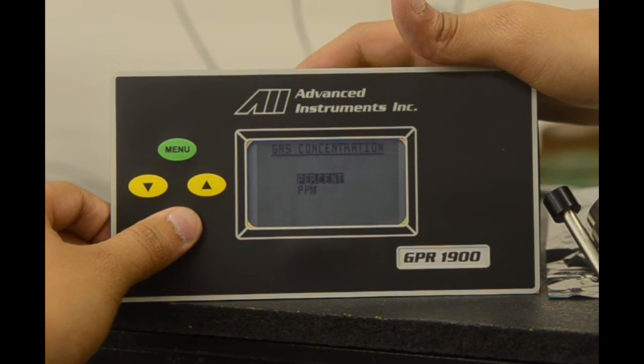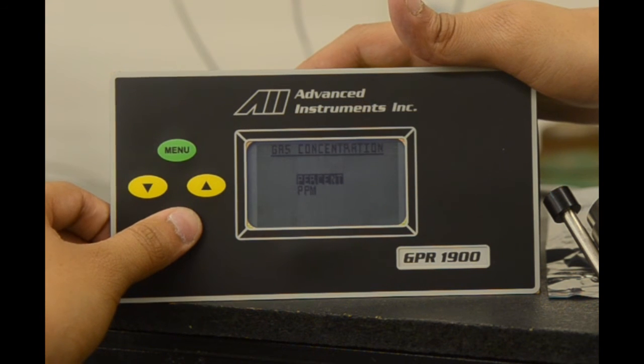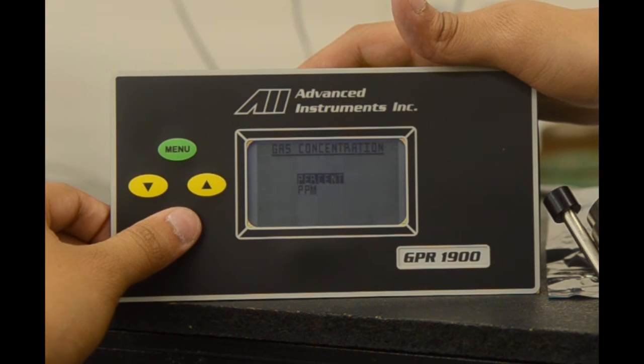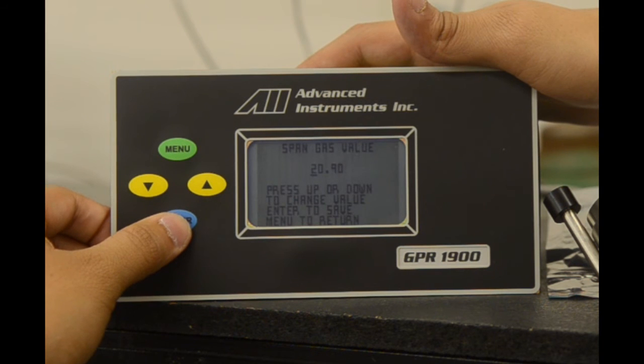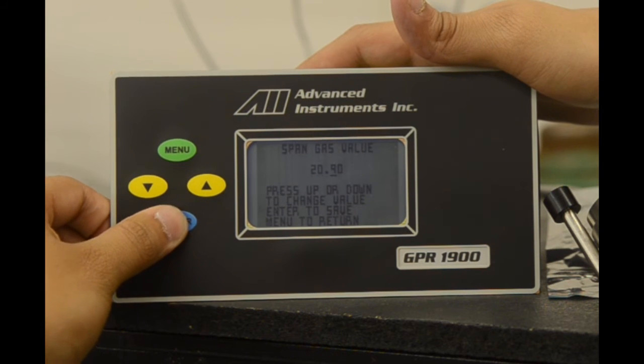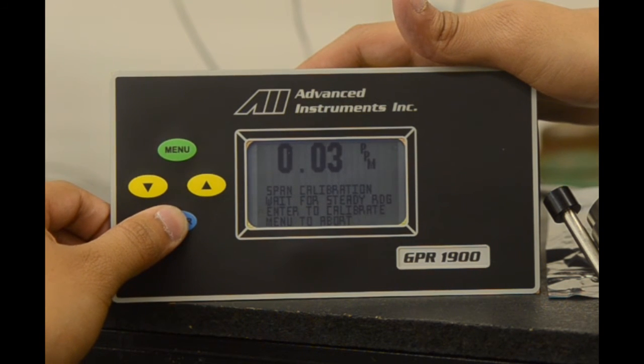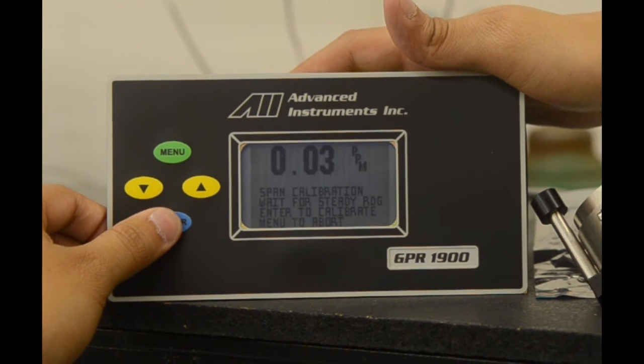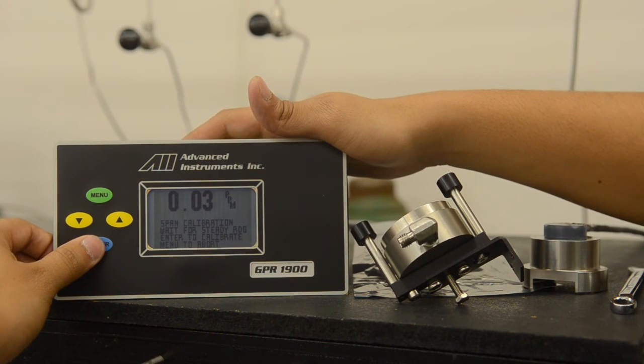Once these are performed, we can scroll back up to span calibrate and select enter. We will be performing an air calibration, so we select the percent. We can easily do a ppm calibration as well. We select enter on percent and it is preset at 20.9, which is the amount of oxygen present in air. We select enter to scroll through and are taken to the screen that shows the current reading of the analyzer.